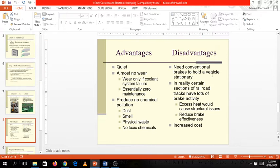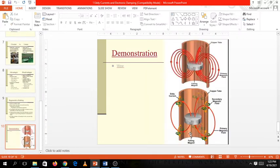However, disadvantage, you still need conventional brakes to hold the vehicle stationary. Of course, for the vehicle to float forever, you need constant moment to make it steady. In reality, certain sections of railroad tracks have lots of brake activity. So excess heat would cause structural issues because of the heat loss generated by the opposing magnetic field. Then you have reduced brake effectiveness, I think the disadvantage because of the reduced brake effectiveness. So you cannot easily brake your vehicle. And of course, increased cost because of the technology being used.